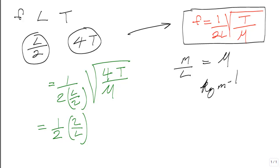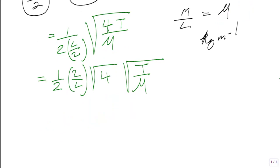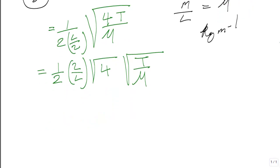So we will have root 4 root T upon mu. And we are starting to see that this expression is looking like what we have in the equation on the right. We can further simplify this by taking the 2 outside of the bracket, putting the half inside the bracket. And so we get that expression 1 upon 2L. Now the root of 4 or the square root of 4 is 2, and we write back T upon mu.